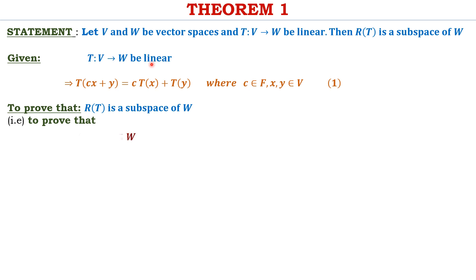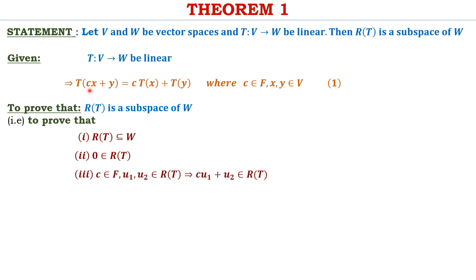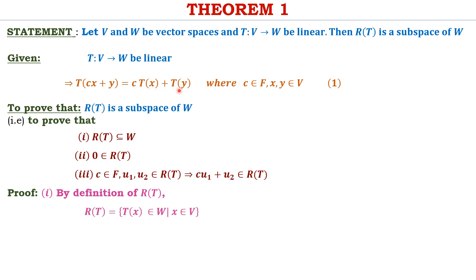What we are given is that T from V to W is a linear transformation, so by the definition of linear transformation, T of CX plus Y equals C times T of X plus T of Y, for C belonging to field F and X and Y belonging to the domain V. We need to prove that R(T) is a subspace of W.